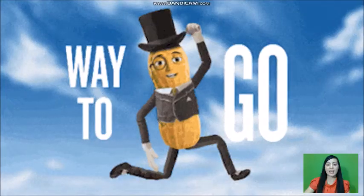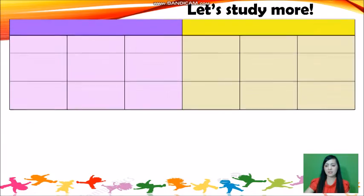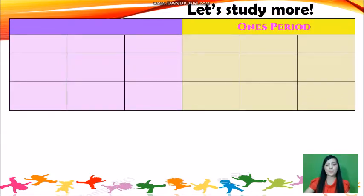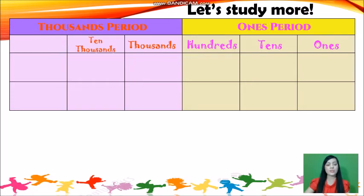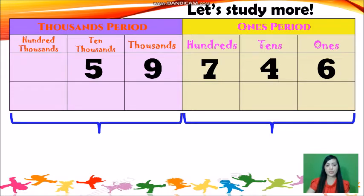Way to go! There is another way to read numbers more easily — by using the place value chart. We have the 1s period, which includes 1s, 10s, and 100s. The next period is the 1,000s period, which includes 1,000s, 10,000s, and 100,000s. Each three-digit group is represented by a period. It is very important to learn about periods so that you can read numbers, because we read numbers by period.